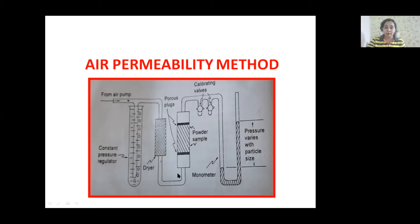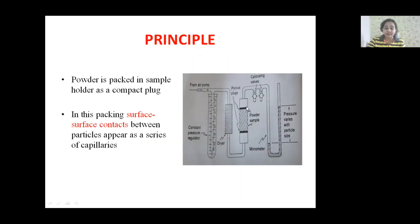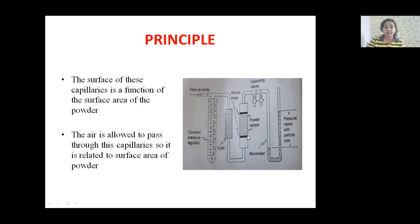Moving on to the principle of the air permeability method — the powder whose surface area is to be determined is packed inside the sample holder as a compact plug. The surface-to-surface contact between particles appears as a series of capillaries, and the surface of these capillaries is a function of the surface area of the powder. Air is allowed to pass through these capillaries, so it is related to the surface area of the powder.